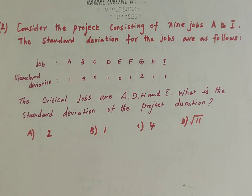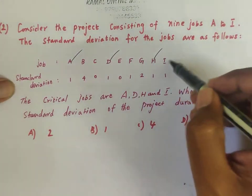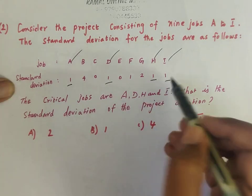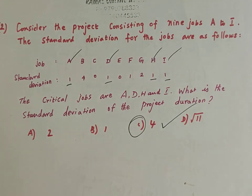Next question: consider a project consisting of 9 jobs A to I. The standard deviations for each job are given. The critical jobs are A, D, H, I. What is the standard deviation of the project duration? Since all standard deviations are 1, the project standard deviation for the critical path A→D→H→I is 1+1+1+1 = 4. Answer: option C.